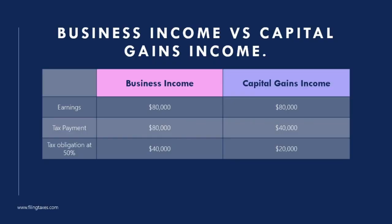For instance, let's consider Dave, a Canadian resident who earned eighty thousand dollars in profit from Bitcoin sales. Dave's high annual salary puts him in a 50 percent marginal tax bracket. If his profit is considered business income, the full eighty thousand dollars is added to his income.